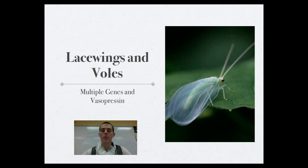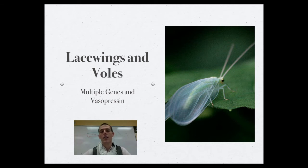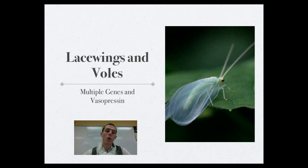In voles, which are small mouse-like rodents, some types give very intense care to their young while others do not. Scientists found this is related to a neurotransmitter called vasopressin. Voles that give good care to their young had high concentrations of vasopressin receptors in the brain, while those that didn't give care had fewer receptors. By flipping genes on and off, scientists found that increasing the genes producing vasopressin receptors in the less-caring species caused those animals to exhibit more caring behaviors towards their offspring.